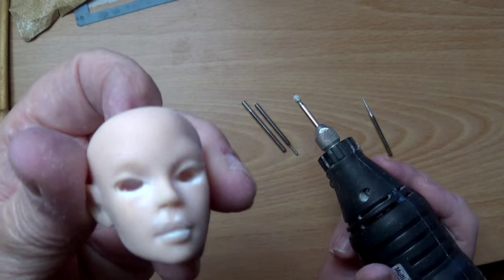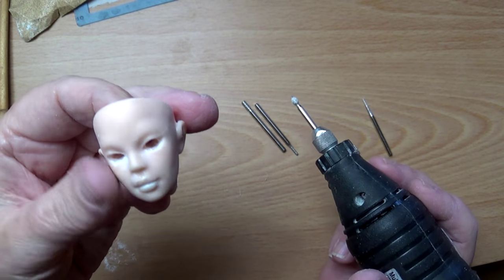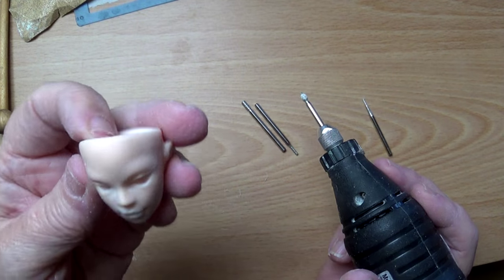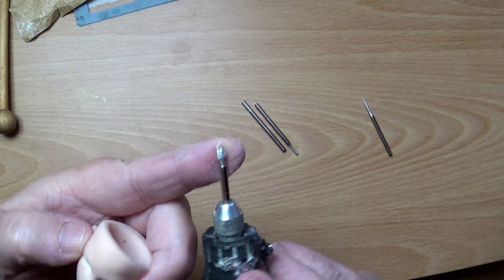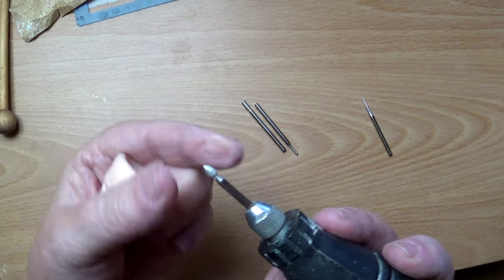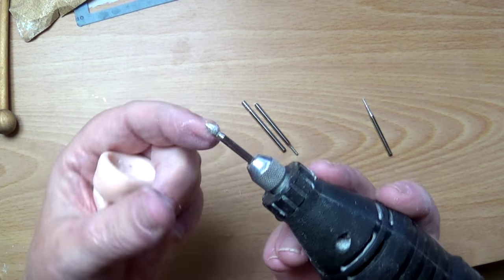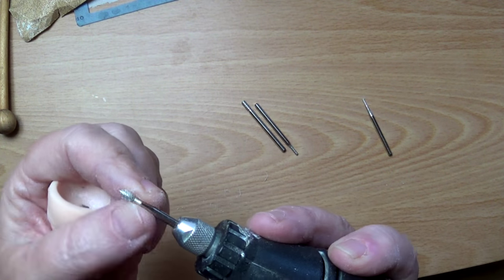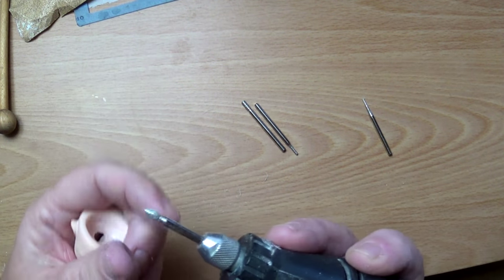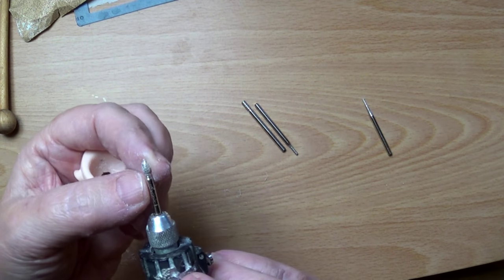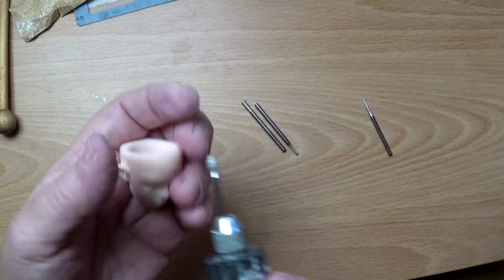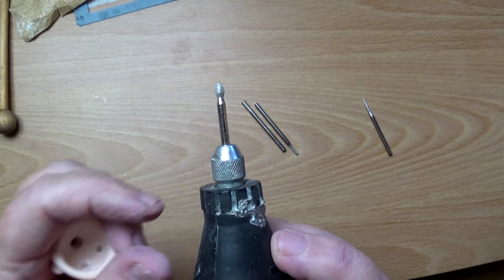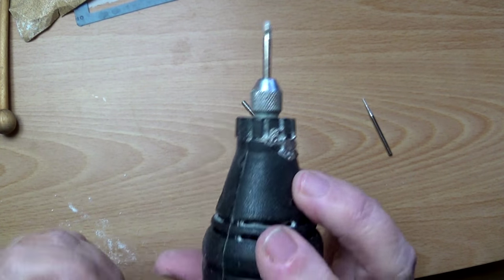Drilled, and now comes kind of a tricky part, and I have to just kind of experiment with this. I have another bit here, and honestly I have to apologize for this because it came in a kit, and I don't know the names of these bits. I do know that the round ball one is a burr, so maybe this is called a burr too. But it has a little point to it.